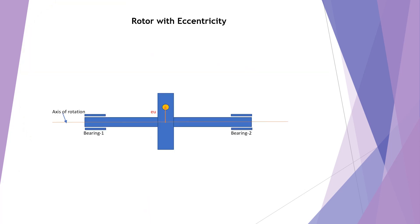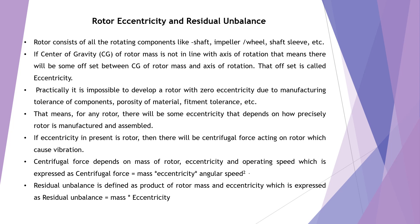This is a rotor which is supported at bearing number one and bearing number two, and this rotor has eccentricity EU which is shown in the figure. The rotor consists of all the rotating components like shaft, impeller or wheel, sleeve, etc. The center of gravity CG of rotor mass is not on the axis of rotation — there will be some offset between the CG of the rotor mass and the axis of rotation. That offset is called the eccentricity of the rotor.